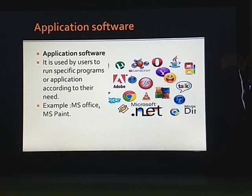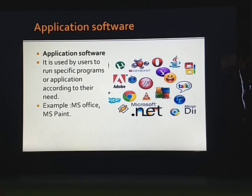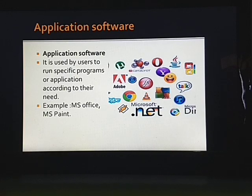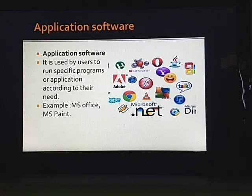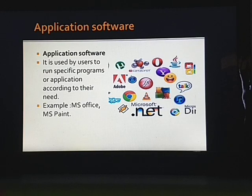Application software is used by the user to run specific programs or applications according to their need. Suppose you need to listen to music from the computer — then you have to install music software. You need to play video games — then you have to install video game software. Thus, it is according to the user's need, and it has specific programs for specific work. For example, MS Office, MS Paint, WordPad — these all are application software.